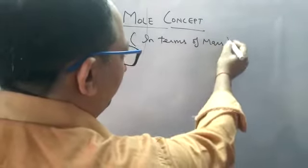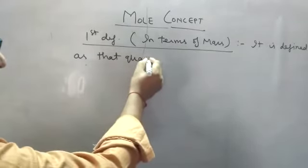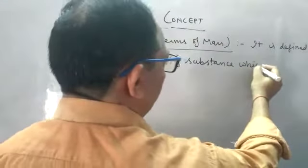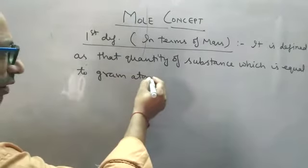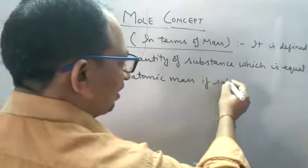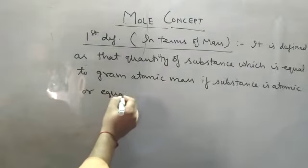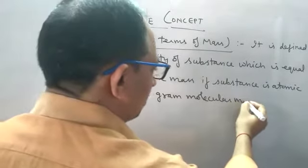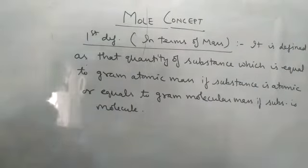The first definition is in terms of mass. A mole is defined as that quantity of a substance which is equal to its gram atomic mass if the substance is atomic, or equal to its gram molecular mass if the substance is a molecule.